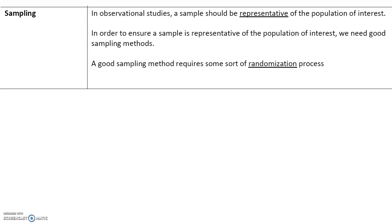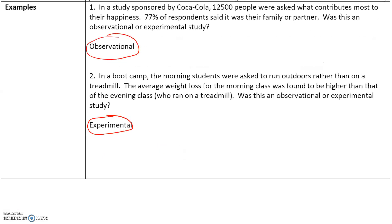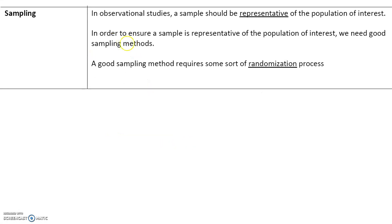In observational studies, a sample should be representative of the population of interest. For example, if you're observing a group of people in a boot camp, then your sample should reflect people who are taking some kind of boot camp. If your sample is made up of people who don't exercise, then that's not a good sample for this kind of study. In order to ensure a sample is representative of the population of interest, we need good sampling methods.